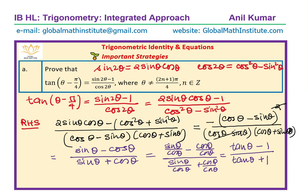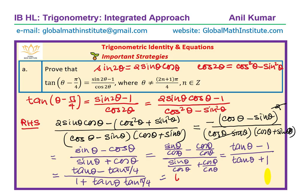Now, tan(θ - π/4) uses the tan subtraction formula: tan θ - tan(π/4) over 1 + tan θ · tan(π/4). Since tan(π/4) = 1, we can write this as (tan θ - tan(π/4)) over (1 + tan θ · tan(π/4)), which equals tan(θ - π/4) — the left-hand side.